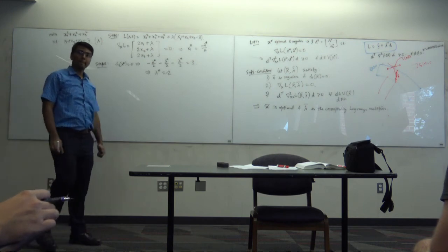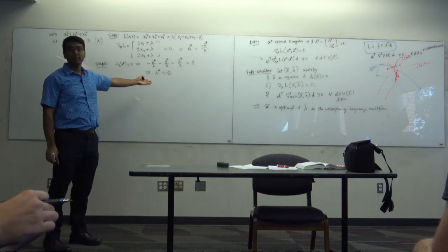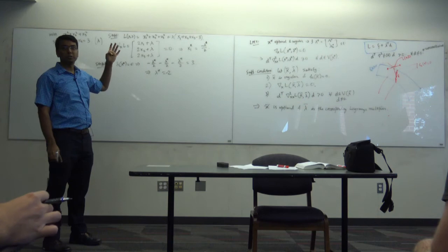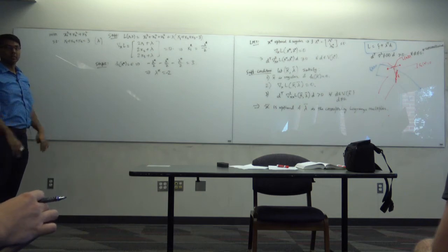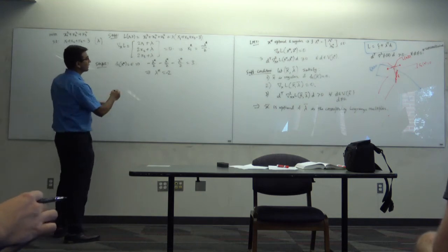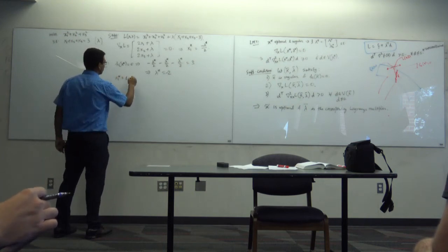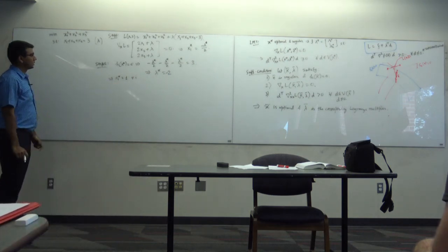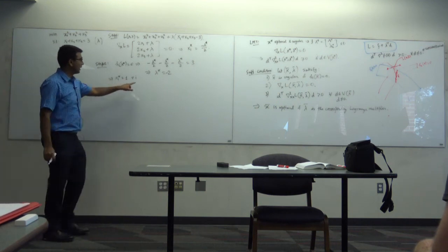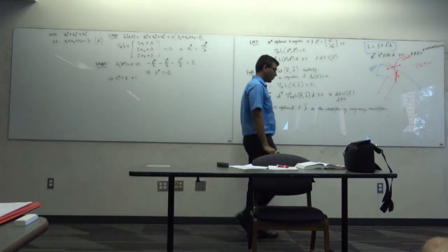In this case I have a unique λ, but you may have situations where you have multiple Lagrange multipliers, and all of them would be candidate solutions. So here I have the candidate solution and the corresponding Lagrange multiplier: λ* = −2 implies xᵢ* = 1. Now the time comes to prove optimality. To prove optimality, I look at the second-order conditions. Regularity hasn't been established yet, so let me do that as step zero.